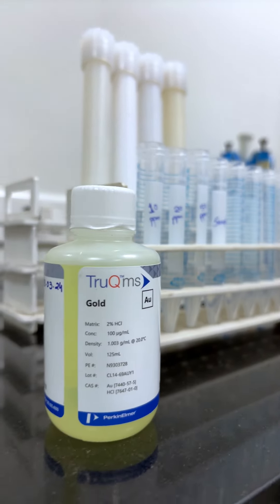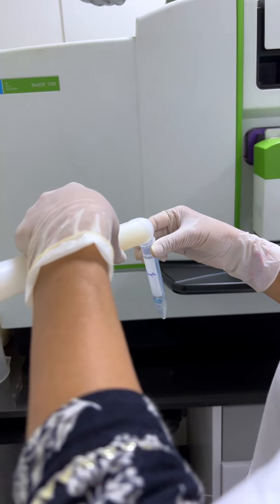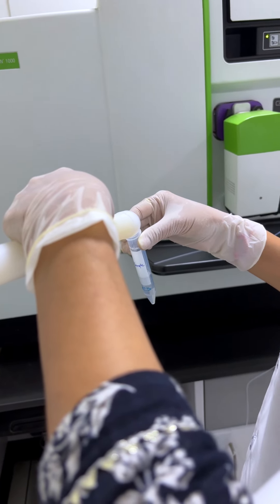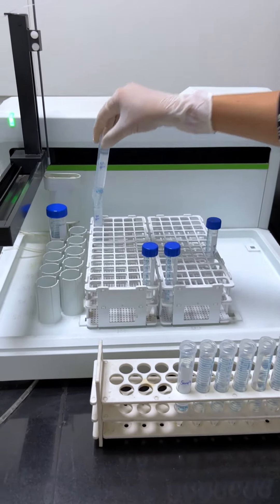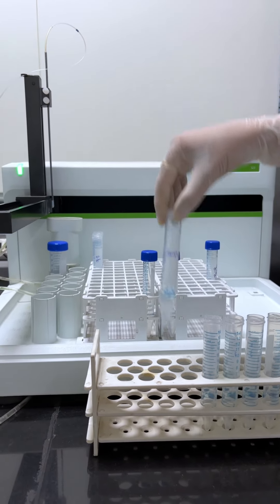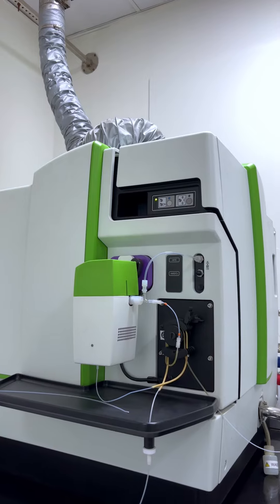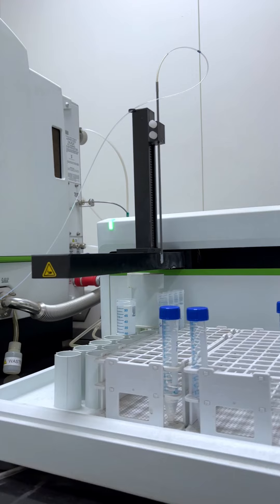Transfer the weighed sample to a digestion vessel. Add a mixture of concentrated nitric acid (HNO3) and hydrochloric acid (HCl) to the vessel. Seal the vessel and place it in a microwave digester to ensure complete digestion of the sample. Allow the vessel to cool to room temperature before proceeding.